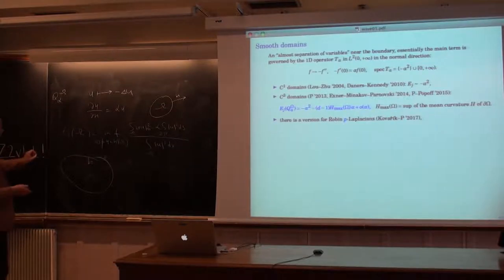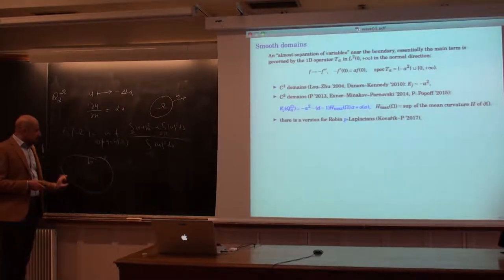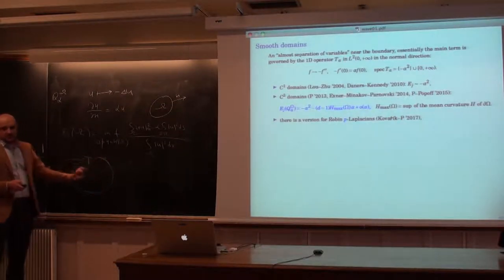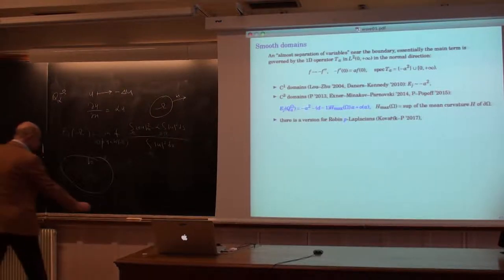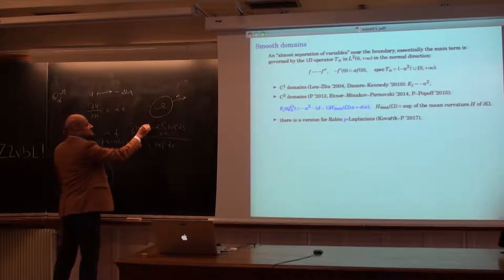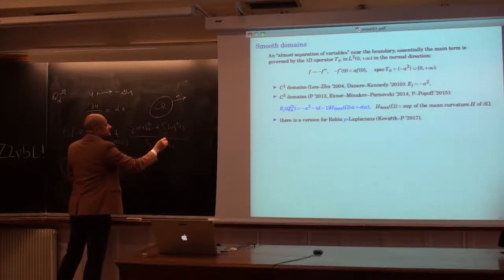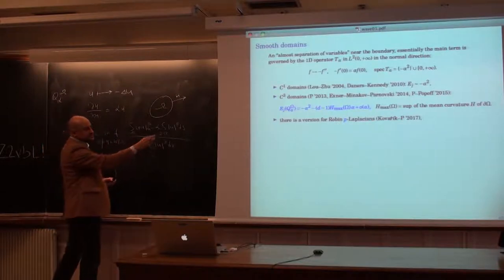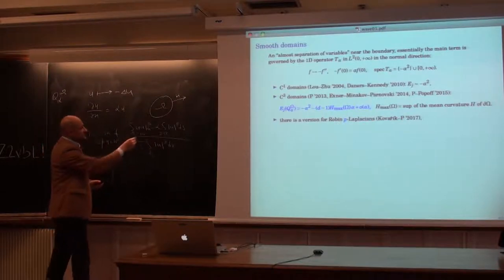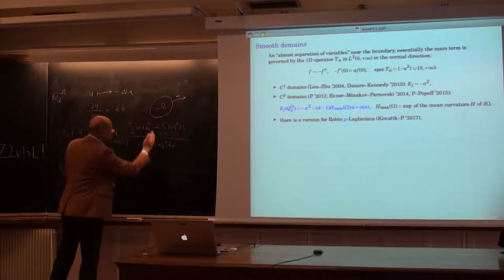One can say a bit more about what happens along the surface, and one can generalize this result also to the p-Laplacian. If you just put p in the appropriate place, we can still analyze the first eigenvalue, and essentially the asymptotic model is the same, except that p will appear in the coefficients.